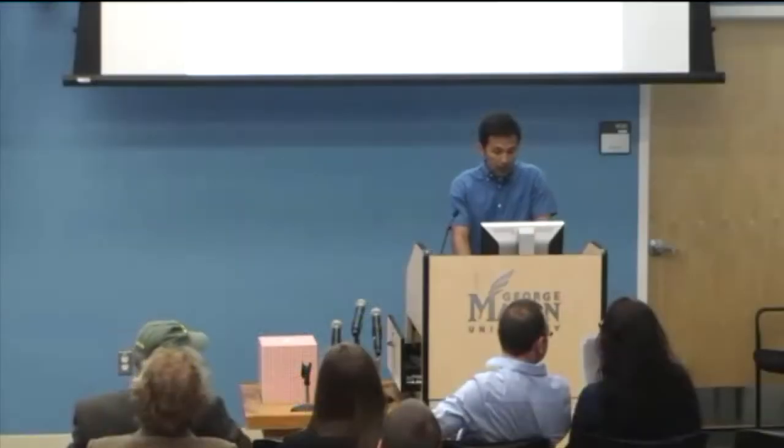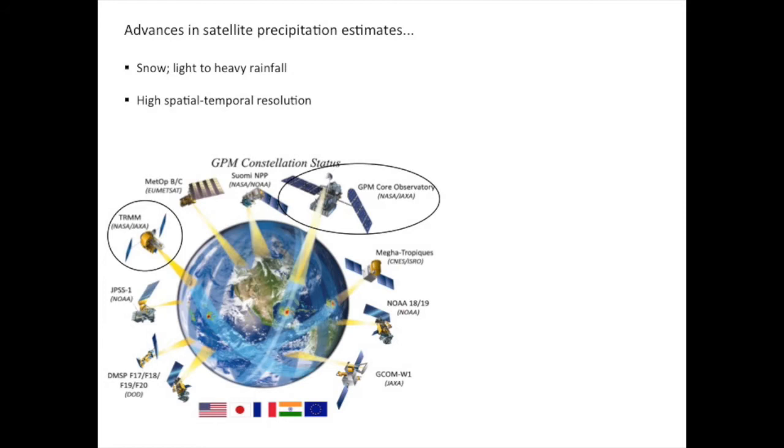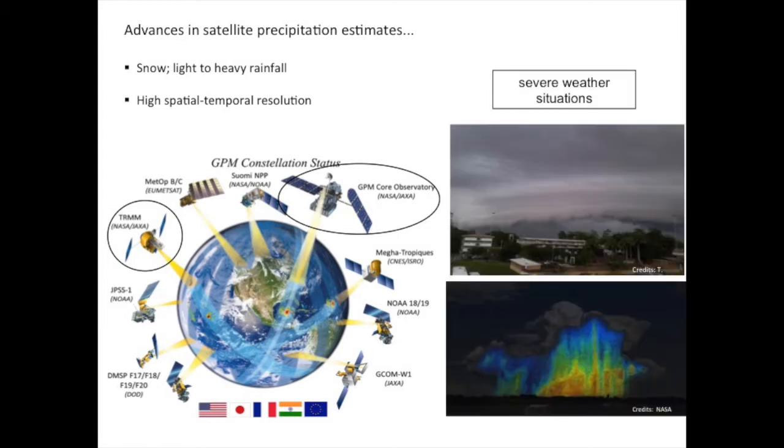Considering the great advances in satellite precipitation estimates, especially with the advent of TRMM and GPM satellites, which enable a great opportunity to better detect, quantify, and understand the characteristics of rainfall with high spatial and temporal resolution globally, with special attention to severe weather situations which impact society in different ways.